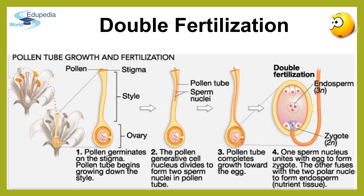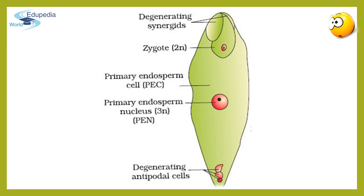The other male gamete fuses with the secondary nucleus. This is triple fusion, forming the triploid endosperm nucleus which later on gives rise to the endosperm. Thus, the process of fertilization which occurs twice in the same embryo sac at a time by the two male gametes — that is, the syngamy and the triple fusion — is called double fertilization. Here, you can see a diploid zygote formed and a triploid primary endosperm nucleus formed as a result of this fusion.